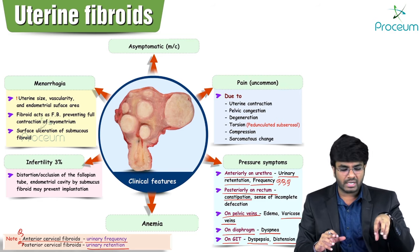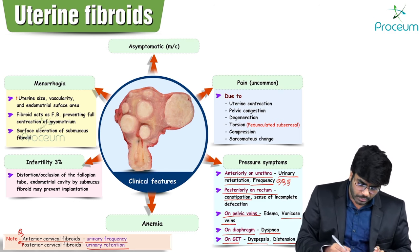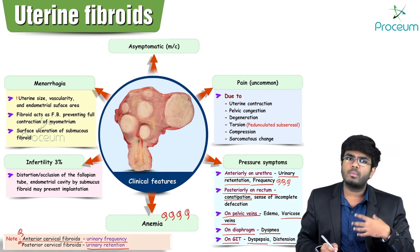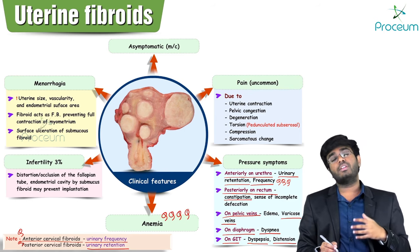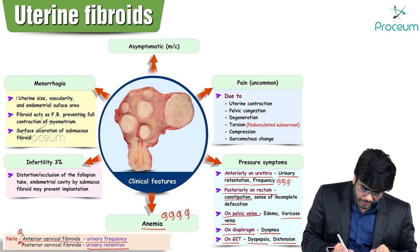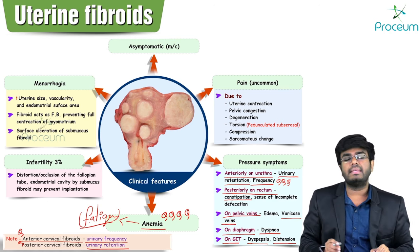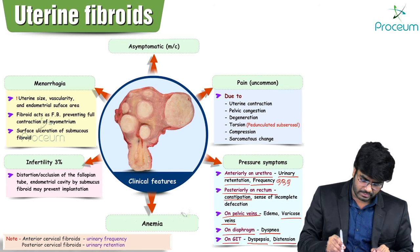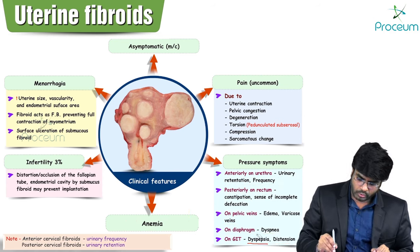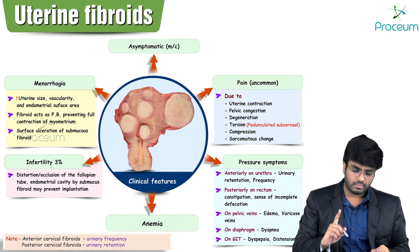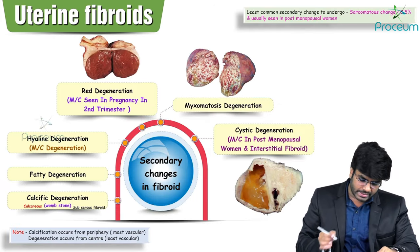Fibroids are associated with anemia due to heavy menstrual bleeding, causing fatigue — an important clinical feature. Broad ligament fibroids, however, are associated with polycythemia through the hydronephrosis-erythropoietin pathway.